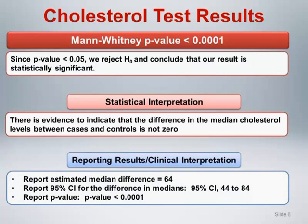For reporting and evaluating the clinical implications of the results, it is recommended to use the same approach as was used for the unpaired t-test. Report the estimated median difference, which is equal to 64. Report an approximate 95% confidence interval for the median difference, with a lower bound of 44 and an upper bound of 84. And report the p-value.